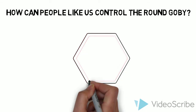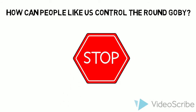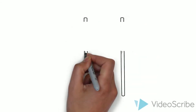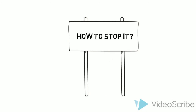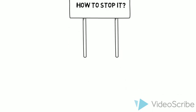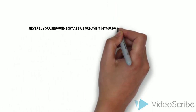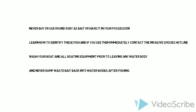How can people like us control the Round Gobi? The Round Gobi is harming native fish by taking over their communities and feeding on eggs of native fish. In addition, it threatens wildlife in the Great Lakes food webs, impacting life at higher trophic levels of the food chain and spreading diseases. These are the exact reasons why we should care and try to stop these fish from expanding. Never buy or use Round Gobi as bait or have it in your possession.